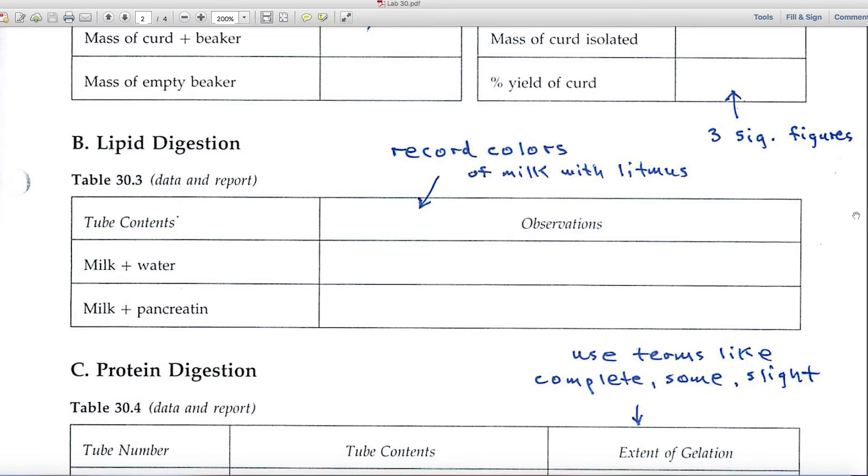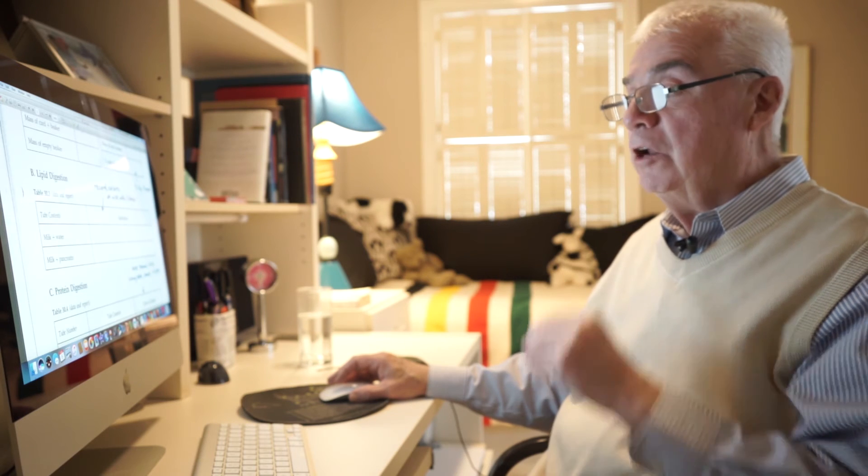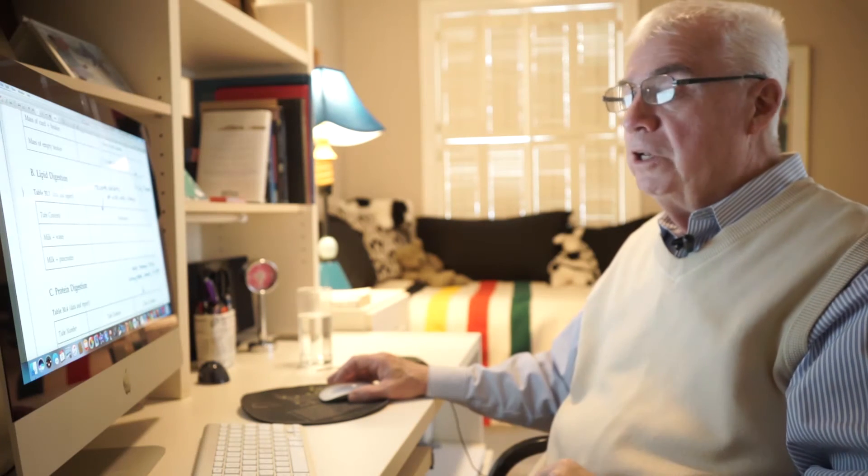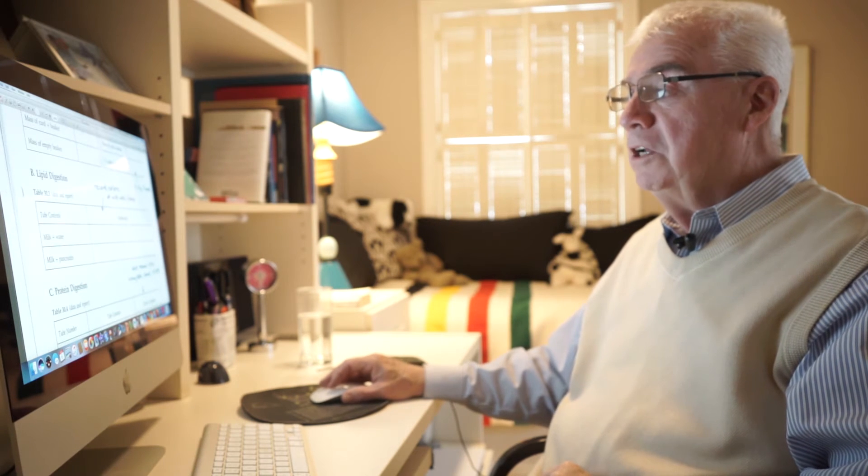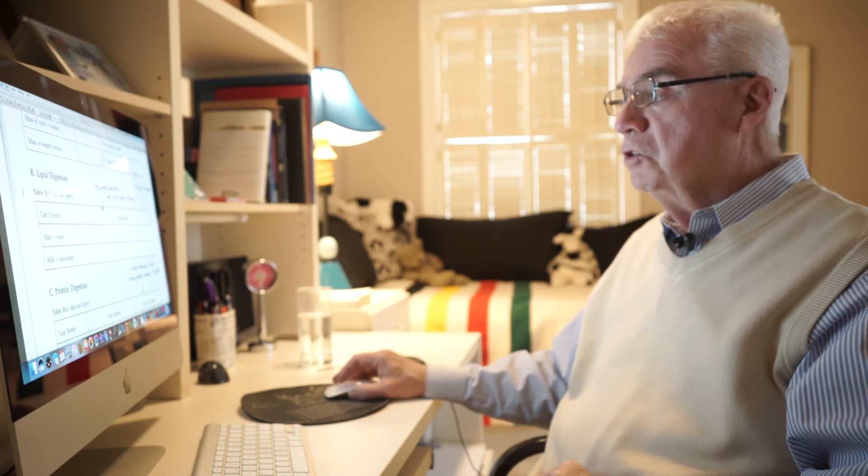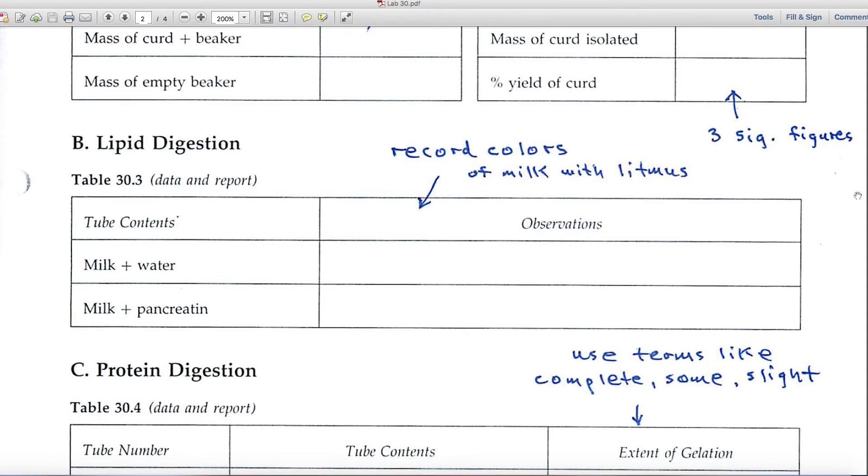In Part B, we're looking at lipid digestion and using milk with some added litmus. Litmus, you know, as an indicator, so it's going to be able to detect acid-base conditions. You'll be concerned with colors, so record your colors here as observations.